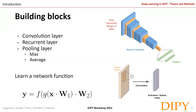Recurrent networks share parameters across different time steps, ensuring that sequential information in the input data is captured. We also have feature selection layers — pooling layers — which make the representation smaller and more manageable. Max pooling maxes out the values within the receptive field of the kernel; average pooling averages them. We may also find fully connected layers, where all neurons have a connection to the downstream layers.